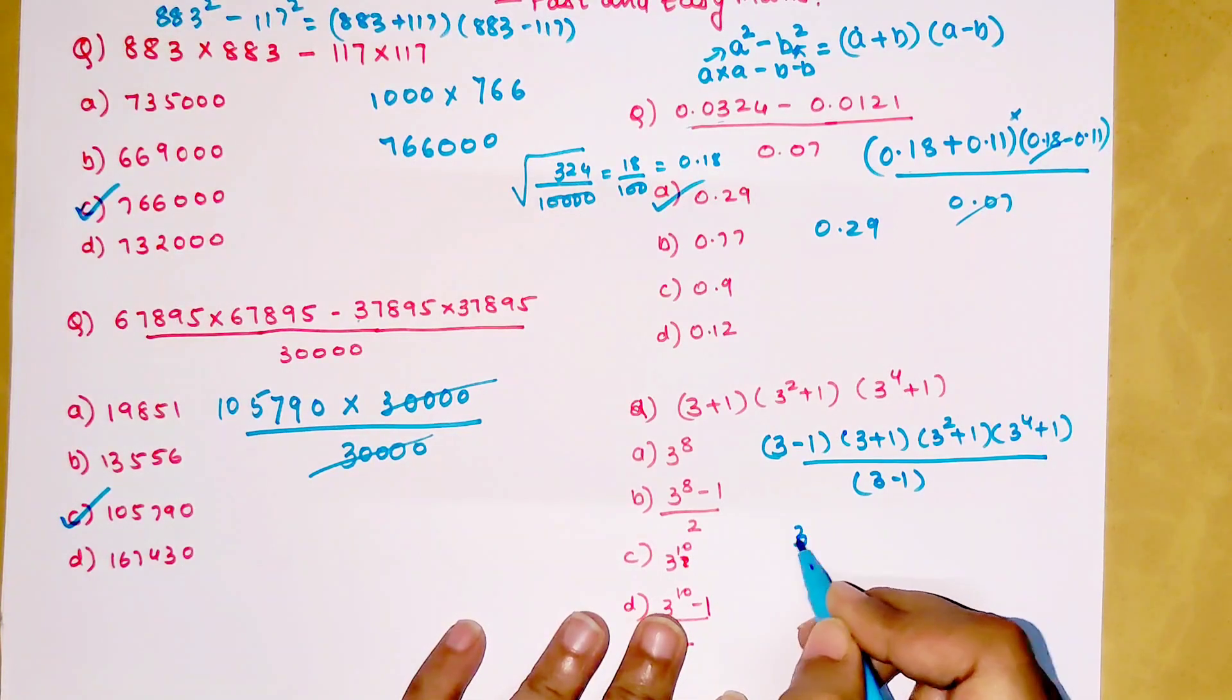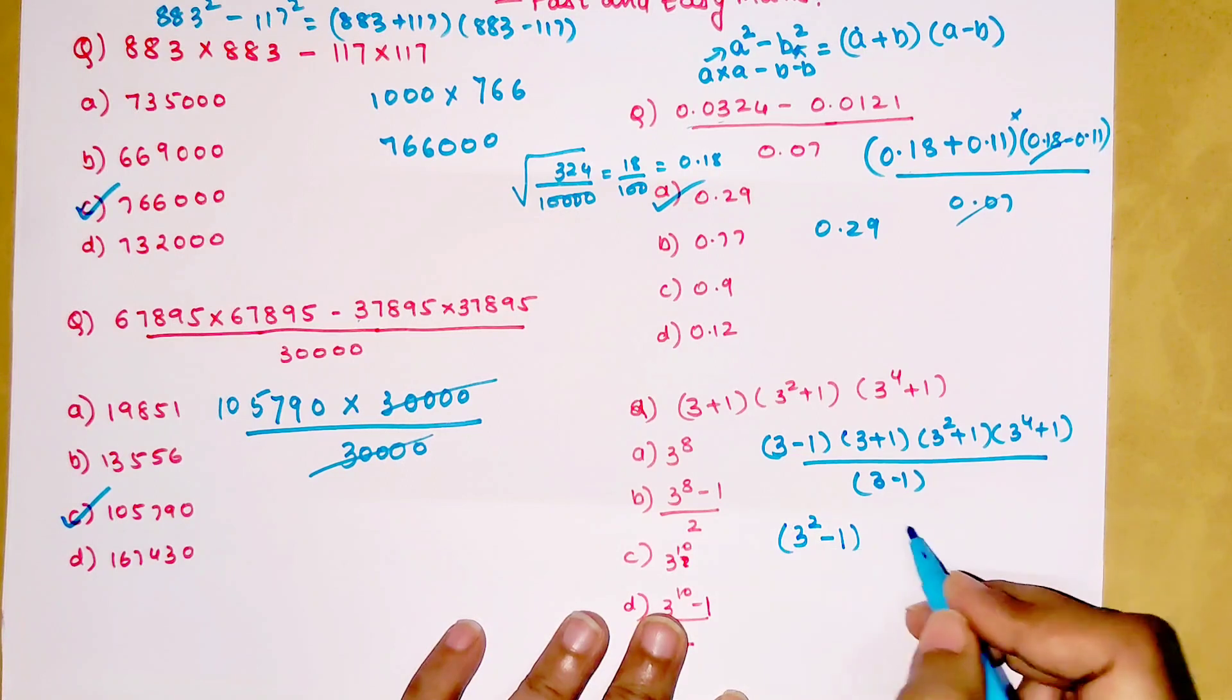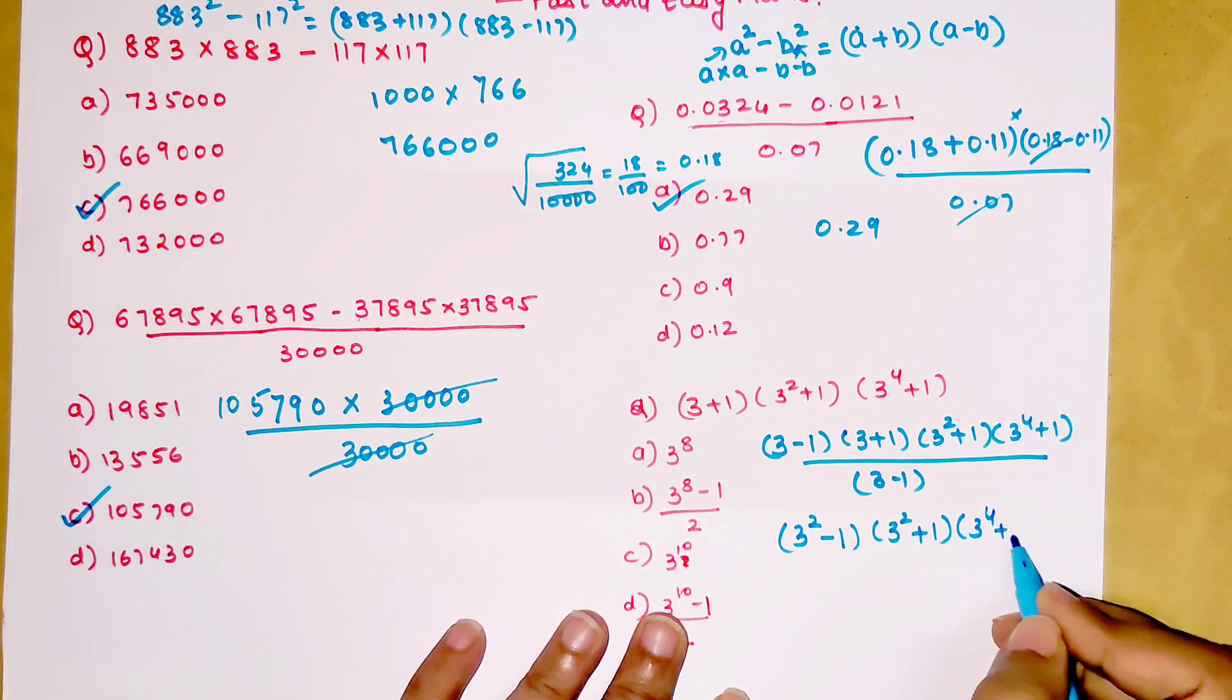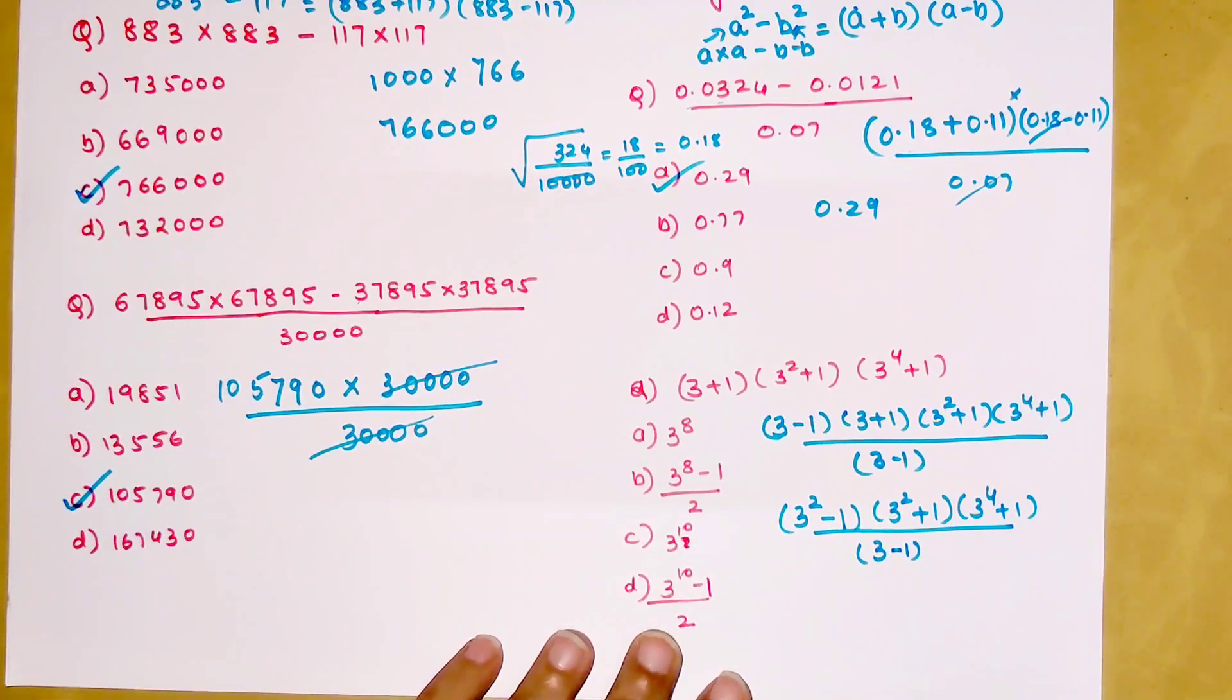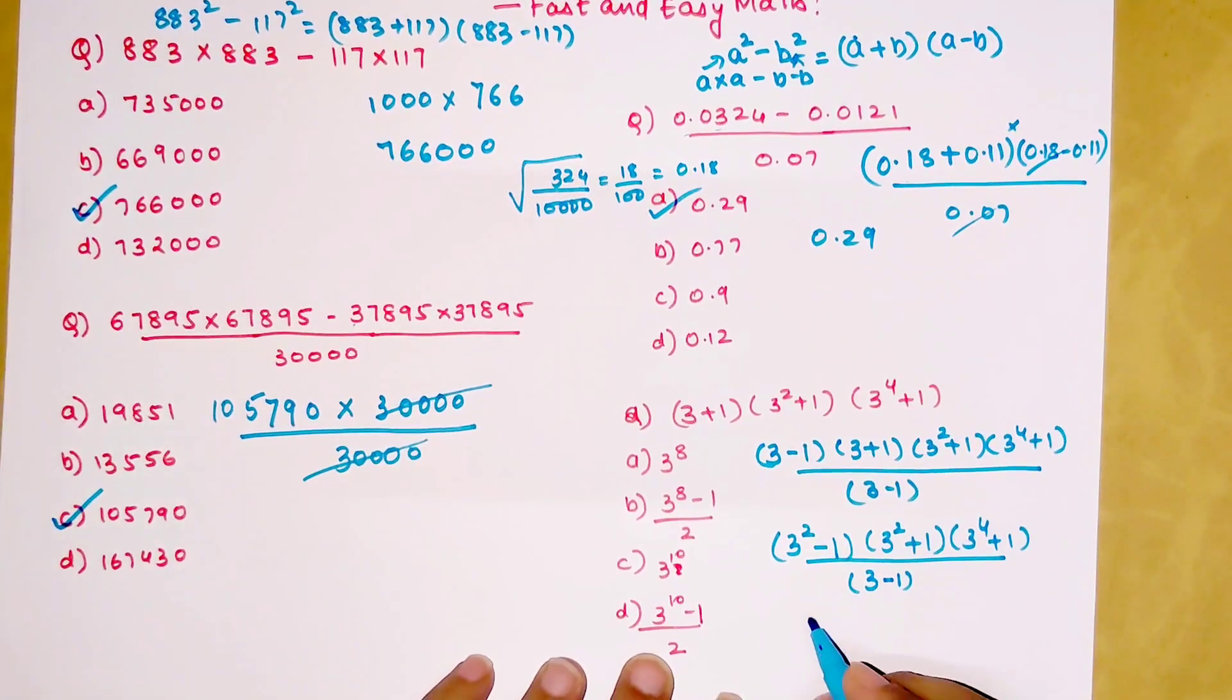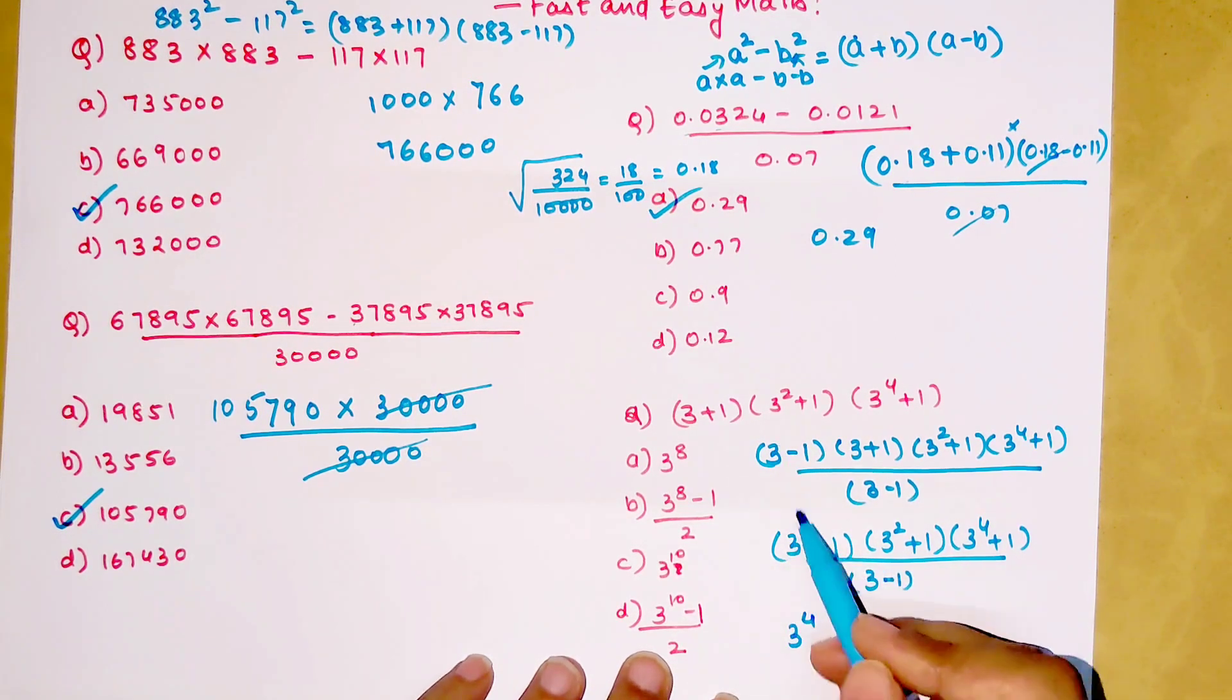This is of the form (a + b)(a - b), so I can write this as 3² - 1² which is just 1. Then we have 3² + 1, then 3⁴ + 1, and we still have 3 - 1 in the denominator. This is also of the form (a + b)(a - b), so now my index changes to 3⁴.